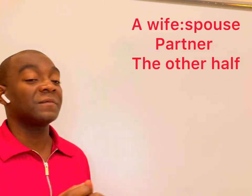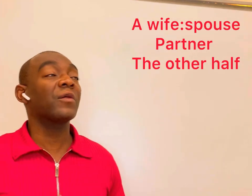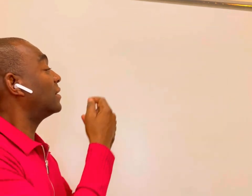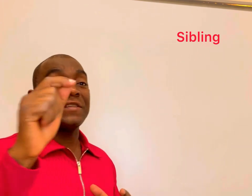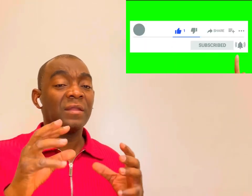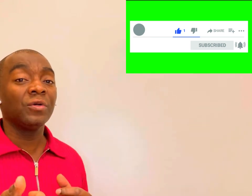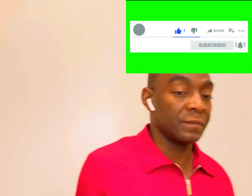Okay guys, this is the short video I bring for you today. You can say 'spouse,' 'partner,' or 'the other half' instead of wife or husband. And for sister or brother, you can say 'sibling.' That's enough for today — practice makes perfect! Please like, share, and leave your comment. Thank you, see you next time.